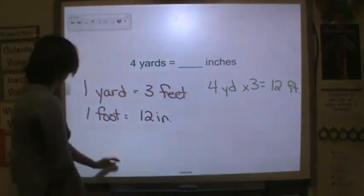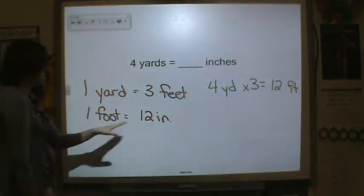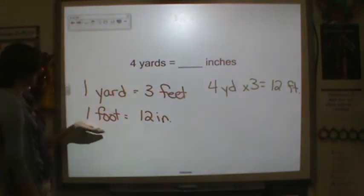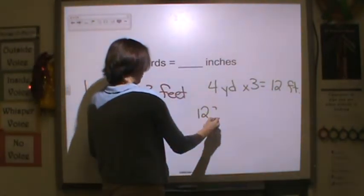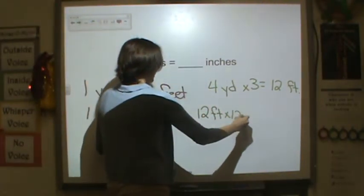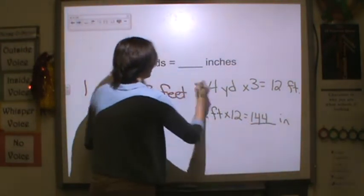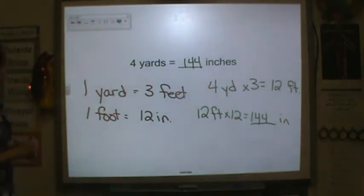But we need inches. Now if I look at the relationship here, I take a foot, multiply it by twelve, I get twelve inches. So the ratio here is one to twelve. I have to take my twelve feet, multiply it by twelve to get my inches. Twelve times twelve is 144. So four yards is equal to 144 inches.